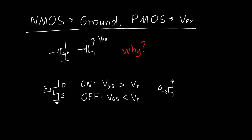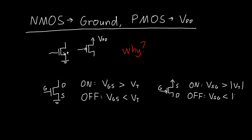With the PMOS connected to VDD as we always do, we have a gate. In a PMOS transistor, holes flow from the source on the top to the drain on the bottom. In order for the transistor to be on, we need the source-to-gate voltage to be greater than the magnitude of the threshold voltage. Conventionally, PMOS threshold voltages are said to be negative. The transistor is off if the source-to-gate voltage is less than or equal to the threshold voltage.